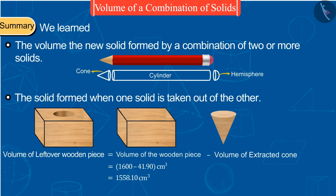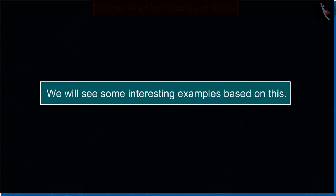In this way, today we learned to find the volume of the new solid formed by a combination of two or more solids, and of the solid formed when one solid is taken out of the other. In the next video we will see some interesting examples based on this.